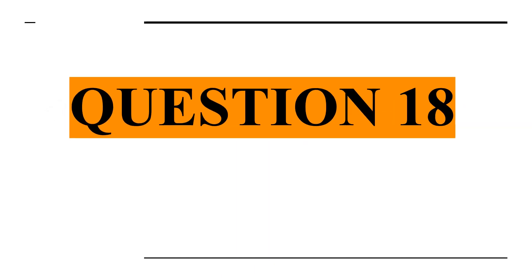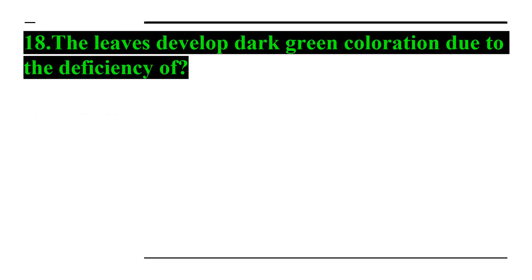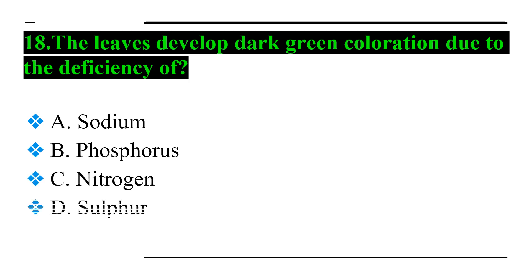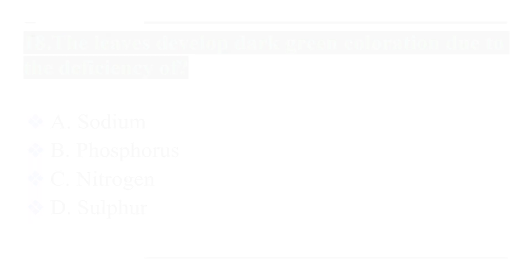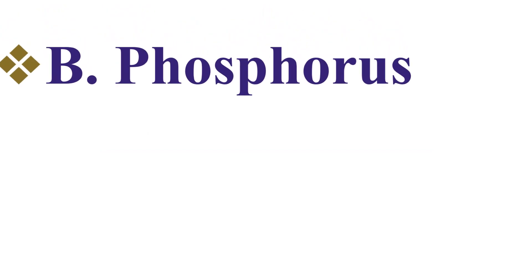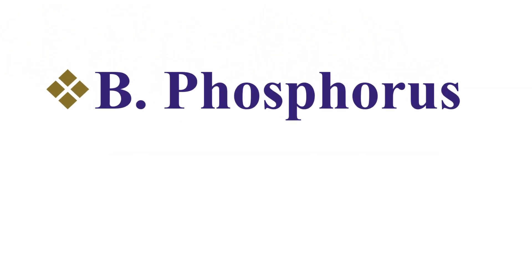Question number eighteen: the leaves develop dark green coloration due to the deficiency of — Option A: sodium, Option B: phosphorus, Option C: nitrogen, and Option D: sulfur. Answer number eighteen: Option B — phosphorus.